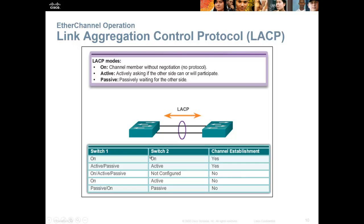EtherChannel never used to be on the CCNA, but on the new CCNA it's covered in the book. I would imagine they're going to ask you some kind of question where they show you two switches and say switch one is 'on' and switch two is 'active' — will they form the channel? So make sure you're aware of that if you're studying for the CCNA, because they used to do that for dynamic trunking protocol: 'this one's dynamic auto, this one's dynamic desirable — will they form a trunk?'